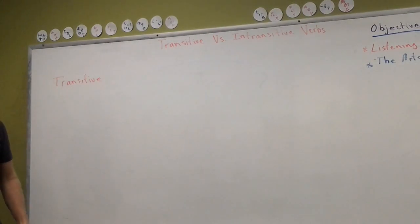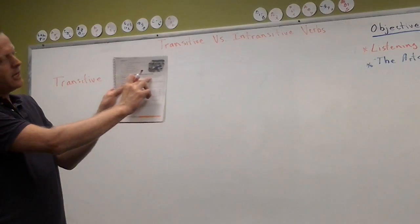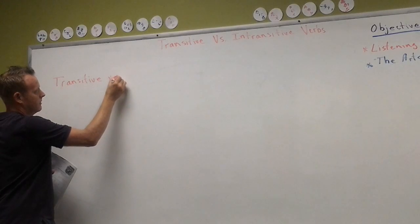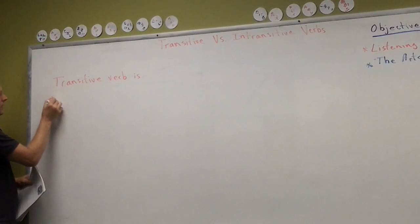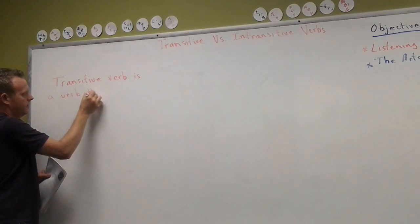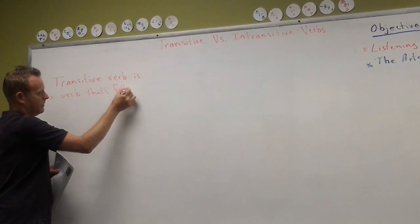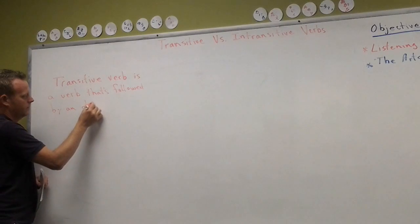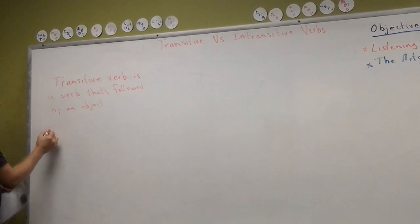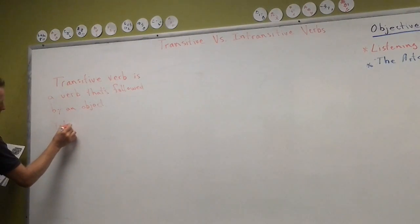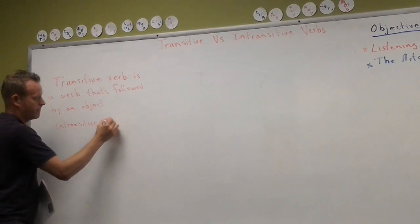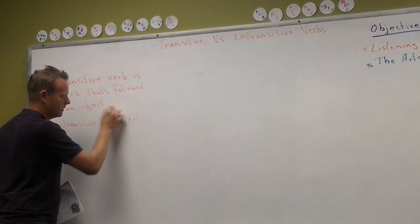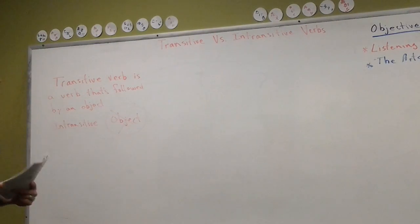So what is a transitive verb? It says in the book: a transitive verb is a verb that is followed by an object. An object is a noun or a pronoun. An intransitive verb is a verb that is not followed by an object. So, intransitive means the verb has no object; transitive means the verb has an object.